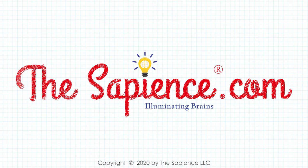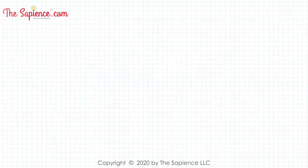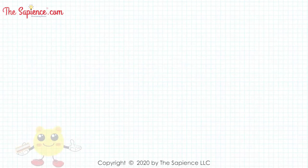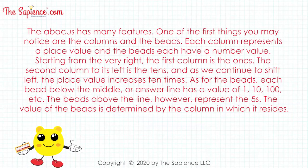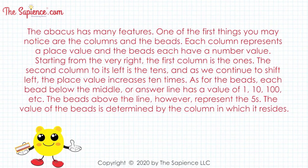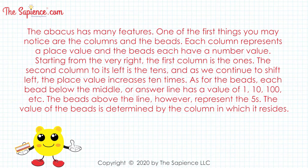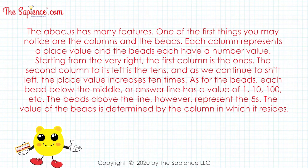Hi, welcome to thesapience.com. The abacus has many features. One of the first things you may notice are the columns and the beads. Each column represents a place value and the beads each have a number value.